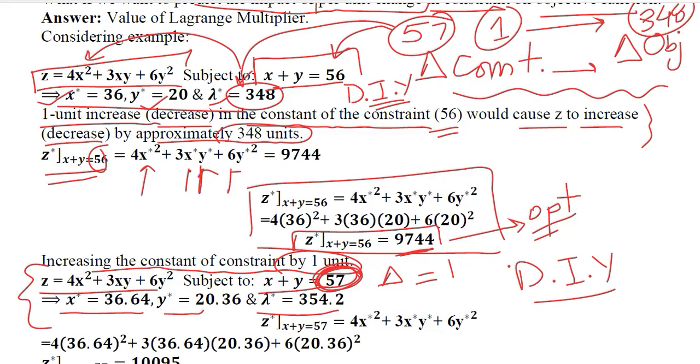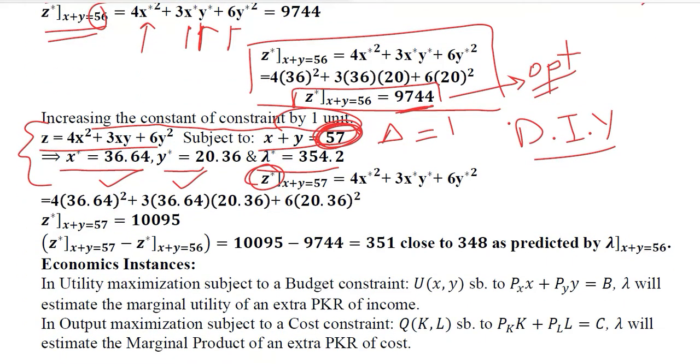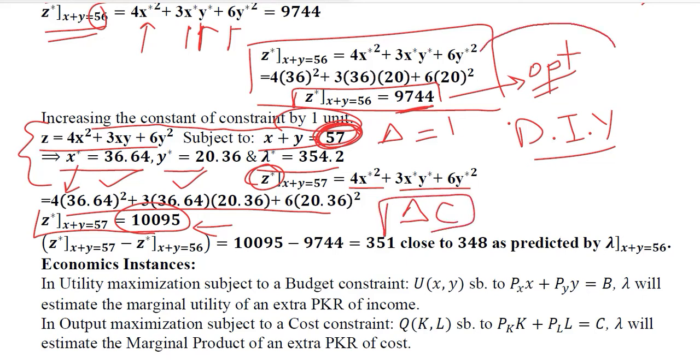Now you can use these two values, critical values to find the value of Z and see that how much it has changed. I have substituted X star and Y star here, the new values of X and Y as the critical values and I found the value of Z to be this much. Now this is the optimized value of Z in this case. This is after per unit change in the constraint and this was the original one. So what is the difference between the two? Let us calculate the post change or after one unit change and the original one. This is the post change value of Z and this is the pre change value of Z.